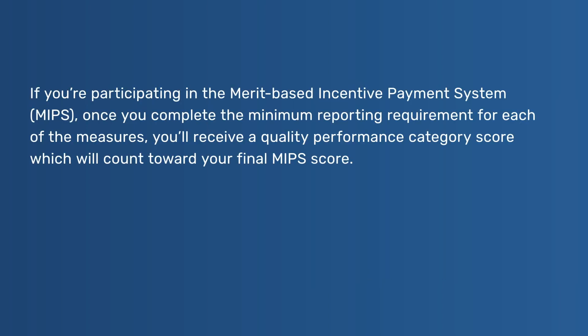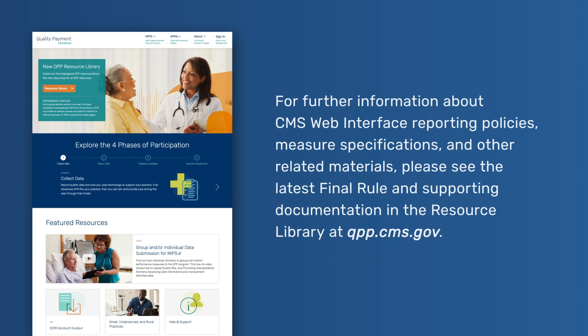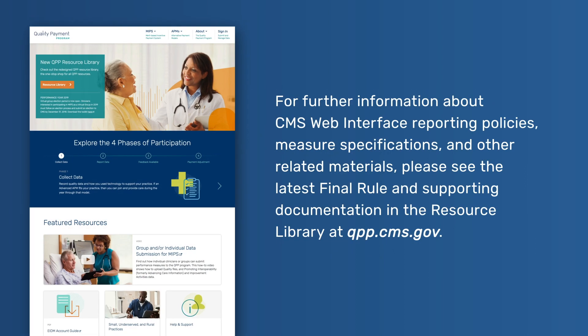If you are participating in the Merit-Based Incentive Payment System, MIPS, once you complete the minimum reporting requirement for each of the measures, you'll receive a quality performance category score, which will count toward your final MIPS score. You must complete the minimum reporting requirement for all of the CMS Web Interface measures for a given performance year to receive a MIPS quality category score of more than zero.